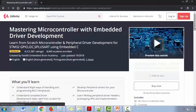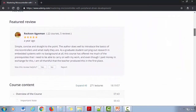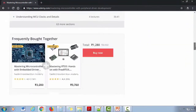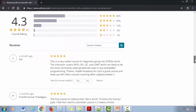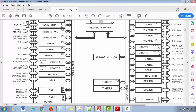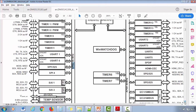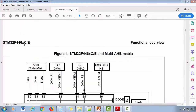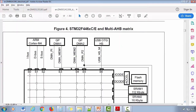This course is all about learning ARM Cortex MX based microcontroller internals and its programming entirely from scratch. From scratch means we are first going to understand the internals of the microcontroller unit such as the processor, bus interfaces, different domains of the microcontroller like the AHB domain, APB domain, the memory map and base addresses of the on-chip peripherals and the AHB bus matrix.